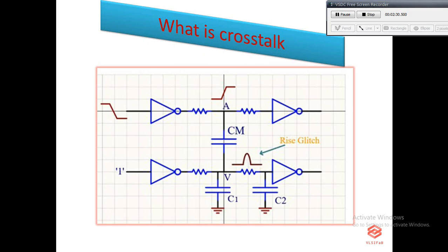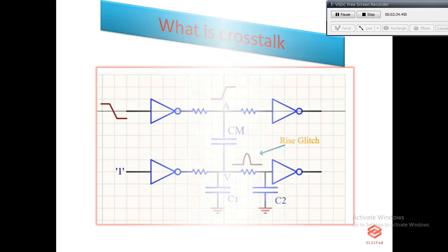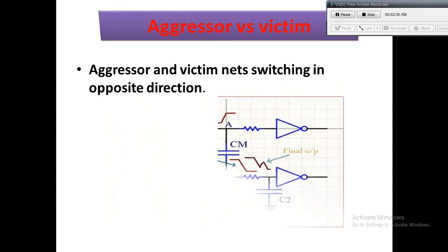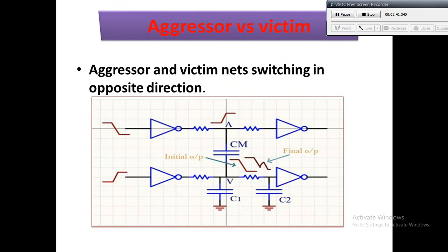Let's discuss more in the next slide. Before going to the next slide, let's first check what is an aggressor net and what is a victim net. So aggressor net is that net which switches states, which switches from 0 to 1 or 1 to 0.